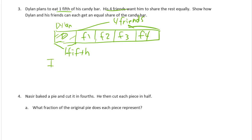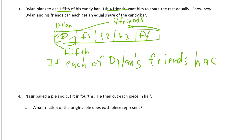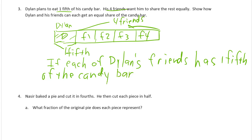So if each of Dylan's friends — he has one-fifth of the candy bar — they will all have equal pieces, or you could call it equal shares.